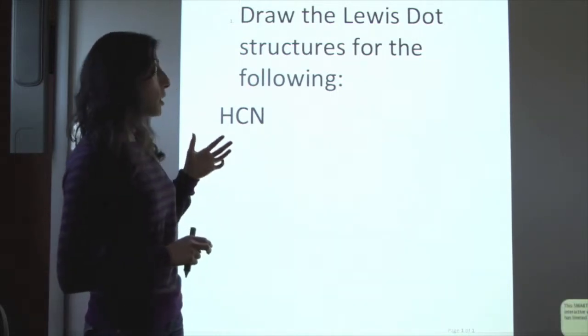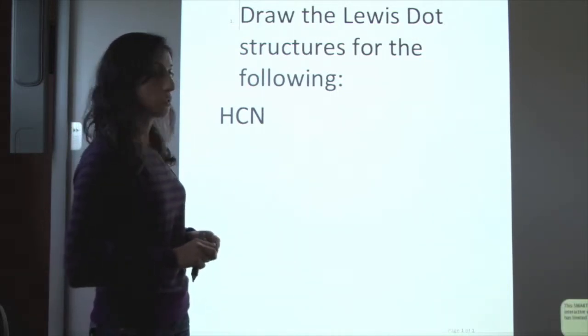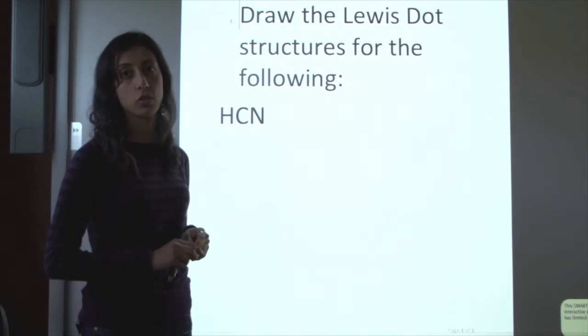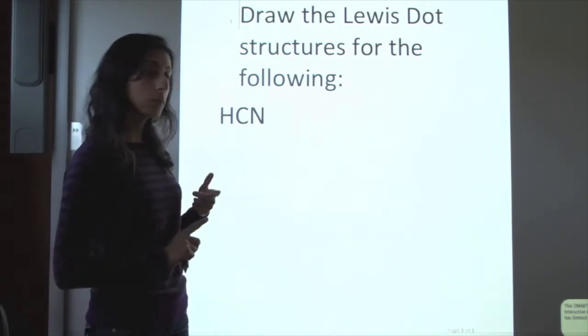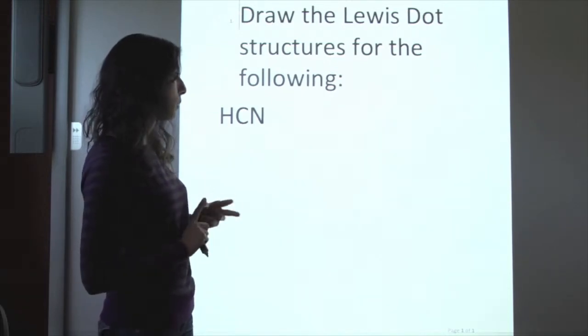First, the very first step in drawing Lewis dot structures is to determine the number of valence electrons that you have. Looking at HCN, we have one atom of hydrogen, one carbon, and one nitrogen.